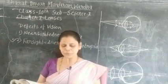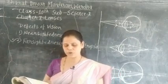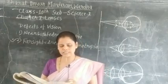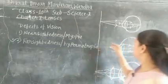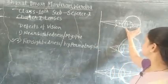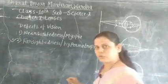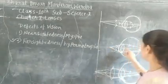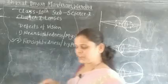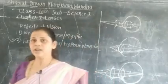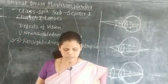The second reason is due to the flattening of the eyeball — the distance between the lens and retina decreases. This is the lens and this is the retina, and the distance between them decreases. These are the two causes of farsightedness or hypermetropia.